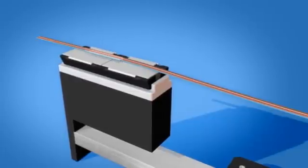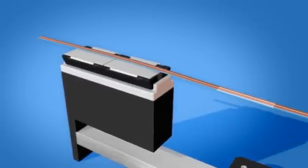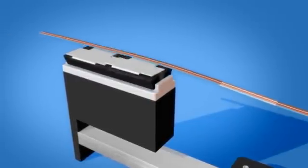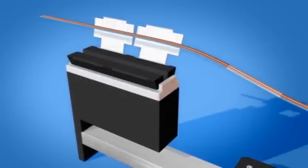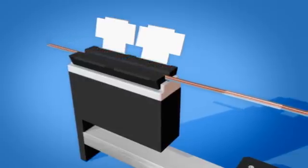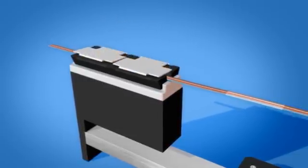Place a splice protector over one of the ribbons to be spliced. Open the lids of the fiber holder. Place the fibers into the fiber holder and close the fiber holder lids.